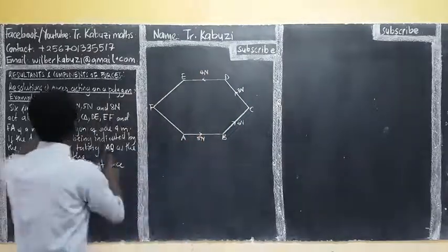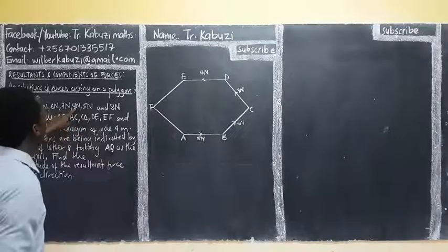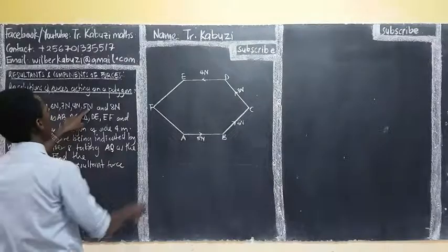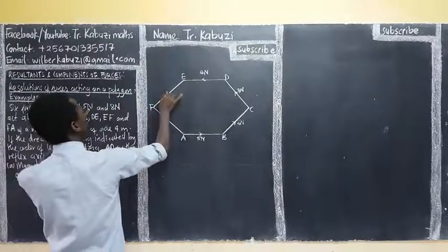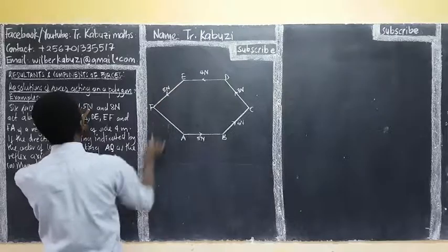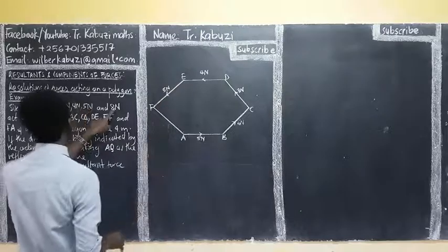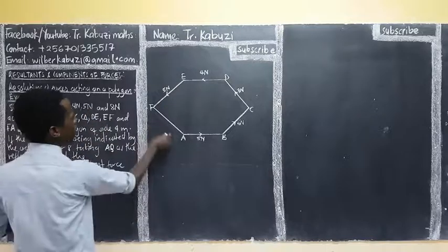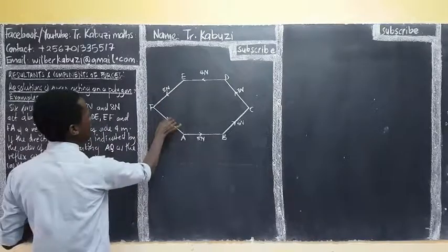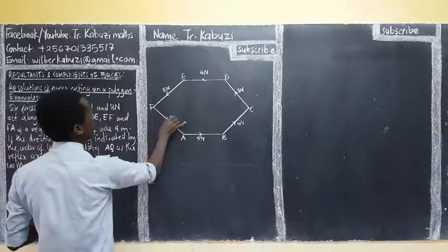In that order, you see our last D, E - then D, F is going to be taking five newtons. Then eight newtons for F, A.